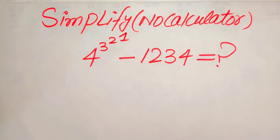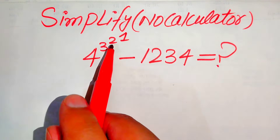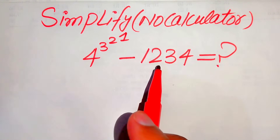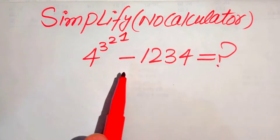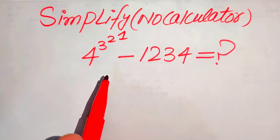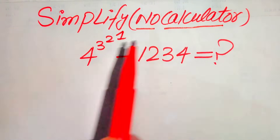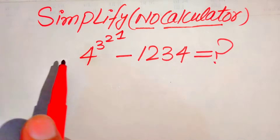Hello everyone. How to simplify this algebraic expression: 4 to the power of 3 to the power of 2 to the power of 1 minus 1234. We write this algebraic expression into simplified form. Note that a calculator is not allowed in this problem, so we will show all of the working on paper.